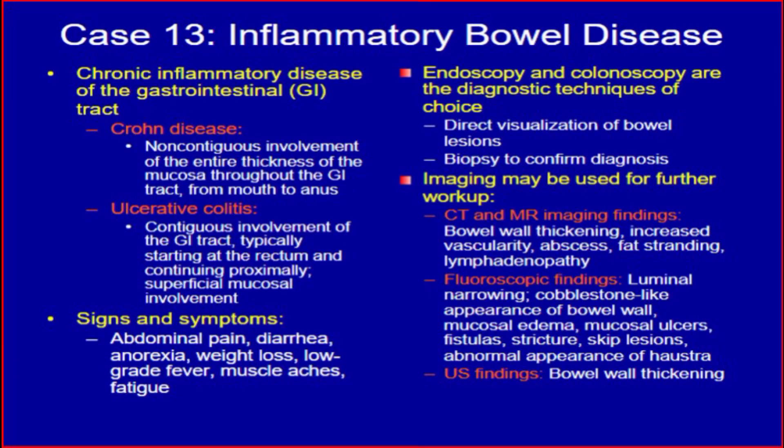Inflammatory bowel disease is a chronic inflammatory disease of the gastrointestinal tract, including: number one, Crohn's disease, which is non-contiguous involvement of the entire thickness of the mucosa throughout the gastrointestinal tract from mouth to anus; and number two, ulcerative colitis, which is contiguous involvement of the gastrointestinal tract typically starting at the rectum and continuing proximally, with superficial mucosal involvement.